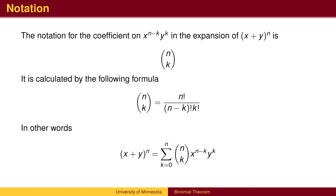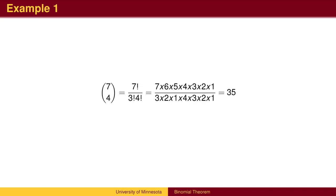The expansion of x plus y to the n is the sum of terms with a coefficient and powers of x and y. Here is an example of calculating 7 choose 4.